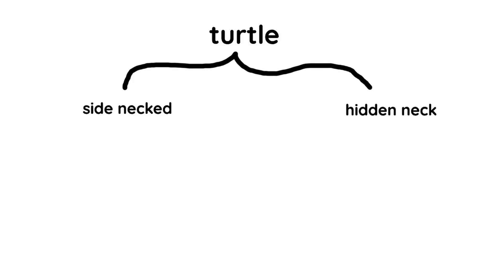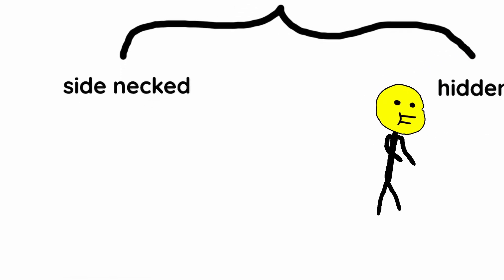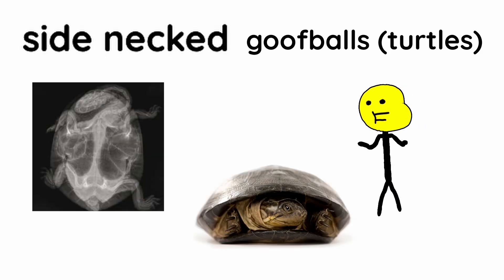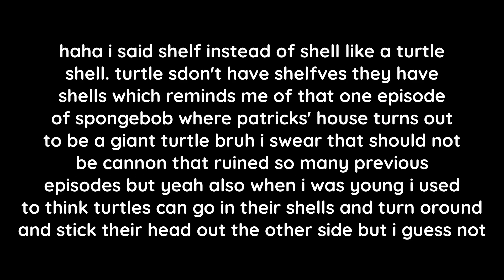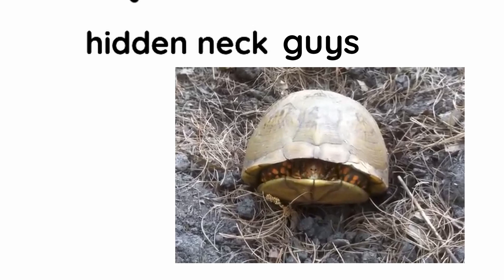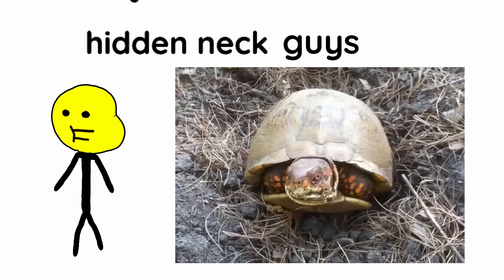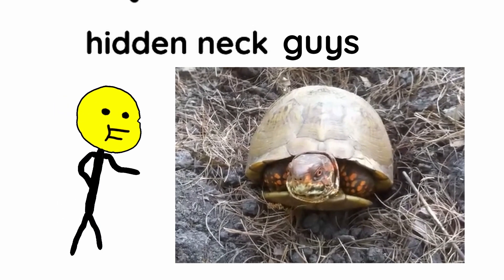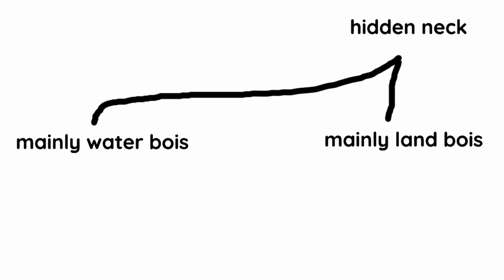Turtles have two types: side neck and hidden neck. Side neck turtles can't even pull their head into their shell. Meanwhile, some hidden neck turtles can literally have a closable door — like a one-head indoor garage. Within the hidden neck family, we have mainly water boys and mainly land boys.